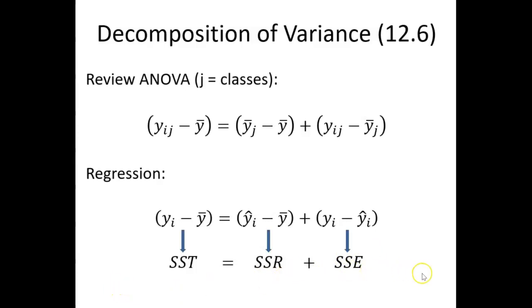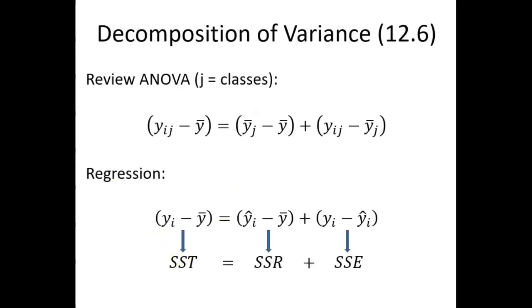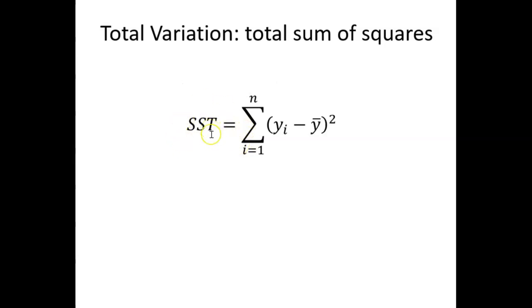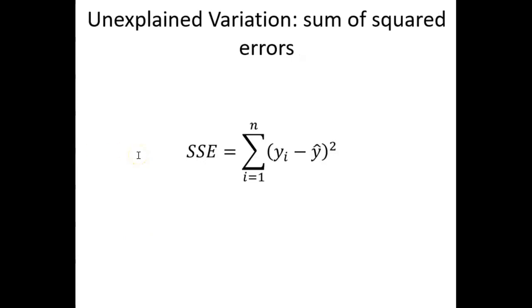Taking this logic of decomposition of variance, we can turn those into sums of squares. The left-hand side, summed over all respondents, is the total sum of squares — the total variation we're trying to explain by the regression model. If we square each of the predicted values minus the mean value and add it up over the entire sample, that is the regression sum of squares, a measure of the explained variation. And we've already defined the sum of squared errors, which is the unexplained variation.